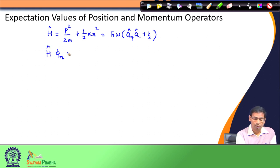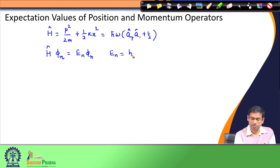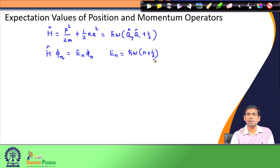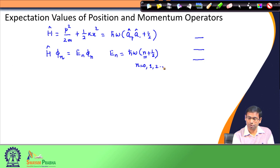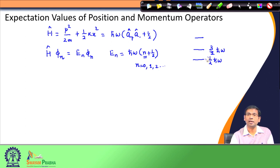We said that if phi-n is the eigenfunction of the harmonic oscillator, the eigenvalue E_n is given accordingly, where n goes from 0, 1, 2, and so on. Therefore, the lowest allowed energy is one-half h-bar omega, the next one is three-halves h-bar omega, and so on. These are the different eigenvalues of the harmonic oscillator problem that we obtained.